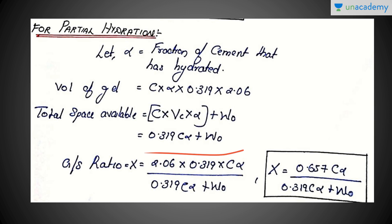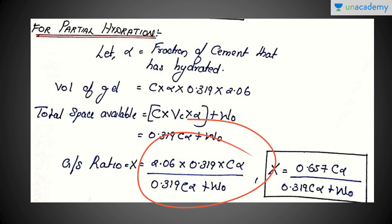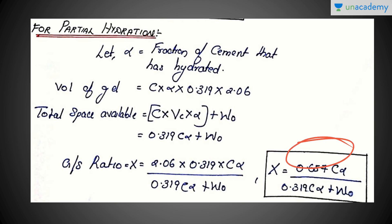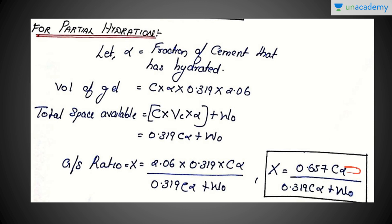When we put everything into the gel space ratio formula, we get: X = (2.06 × 0.319 × Cα) / (0.319Cα + W₀). When calculated, the gel space ratio for partial hydration is X = 0.657Cα / (0.319Cα + W₀). The only difference from the complete hydration formula is the introduction of alpha — the fractional portion of cement that has hydrated.